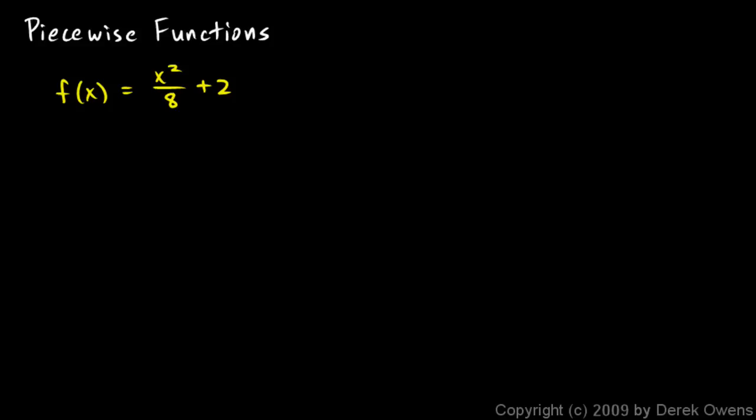For example, let's suppose that we had one rule, one expression like this, for calculating y values when x is negative, and another rule for calculating y values when x is positive. And I'll give you an example of a piecewise function. We can call this example 1.